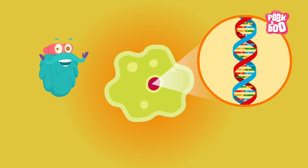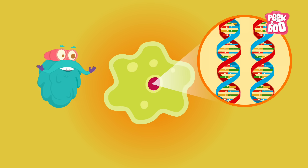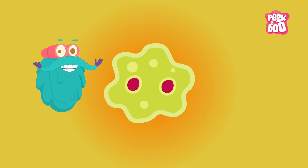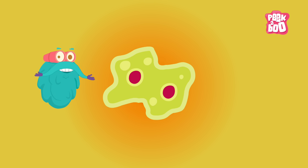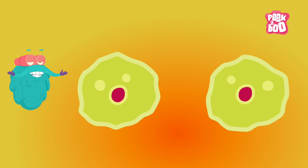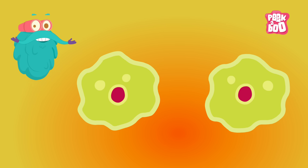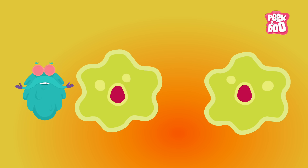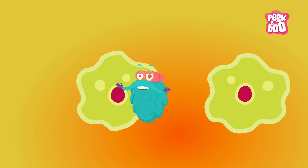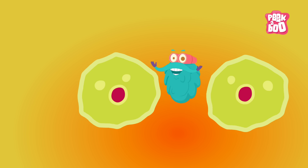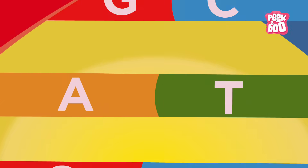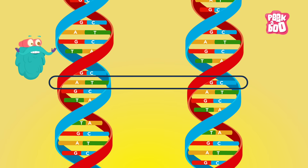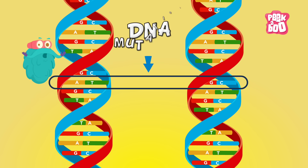In simple creatures like a single-cell amoeba, reproduction happens by copying of DNA within their own body and moving these copies to each side. Then they split into two parts and grow back into a fully formed creature. And if everything goes smoothly, the two new amoebae will be an exact copy of each other. But things don't always go according to plan. While copying the DNA, errors can occur, resulting in modifying the DNA code. This process is called DNA mutation.